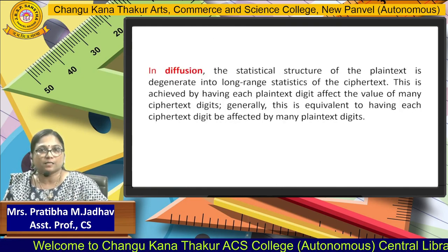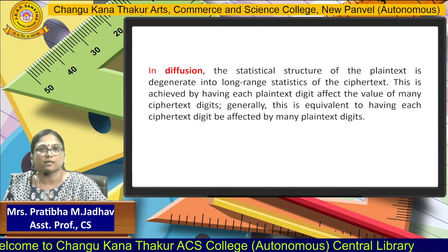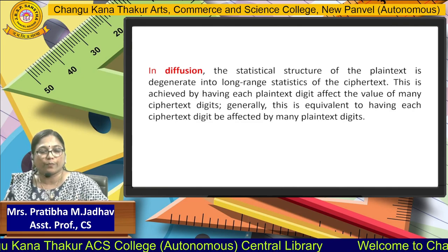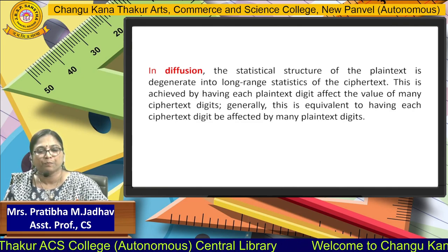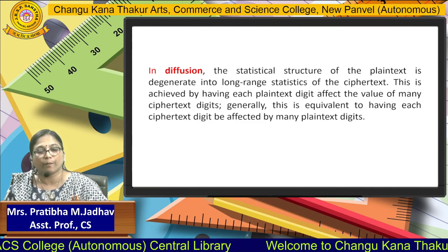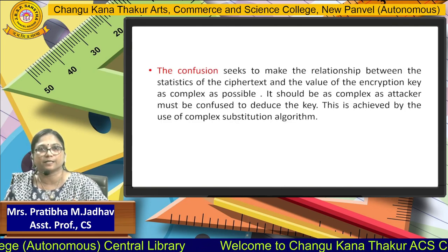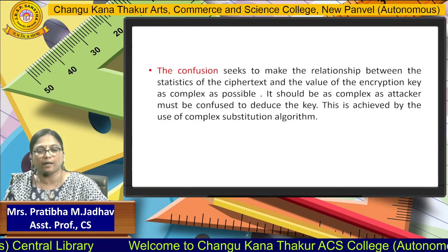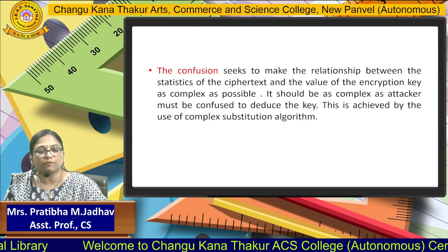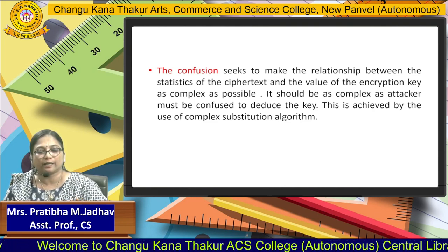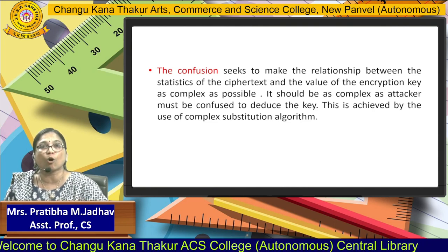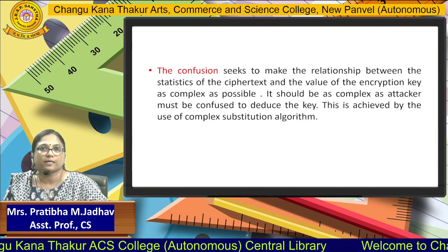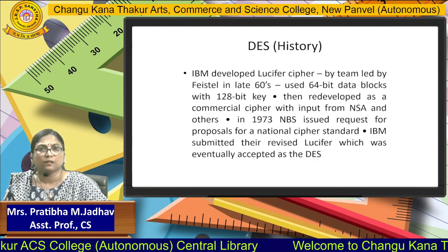Two more concepts are the confusion and diffusion functions. The Feistel structure is practically applicable to the DES algorithm, which was developed by Claude Shannon, who gave these two functions based on his proposal. In diffusion, the statistical structure will be compressed and replaced by many ciphertext digits. In confusion, if encryption is in large format, then the key is deduced — that is compression will occur — and this is achieved by a complex substitution algorithm.